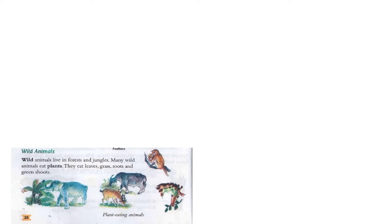We start with page 26, and our topic is wild animals. Wild animals live in forests and jungles. Many wild animals eat plants — they eat leaves, grass, roots and green shoots. These are known as plant-eating animals. In this picture you can see an elephant eating a banana tree, a deer eating grass, a giraffe having some leaves, and a monkey eating a banana.